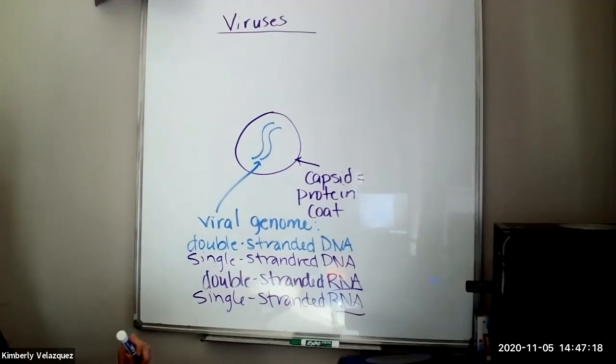So viruses have some pretty crazy genomes. They can also have circular genome, similar to what bacteria have. They can have a linear genome.